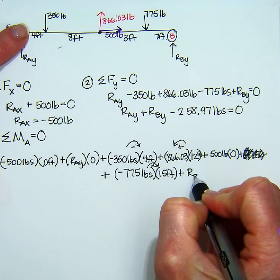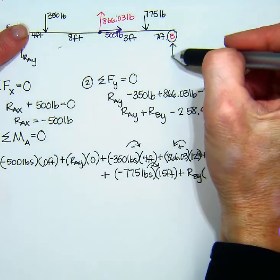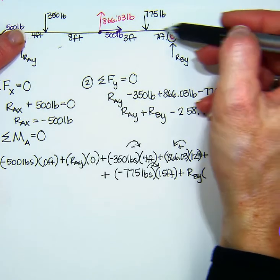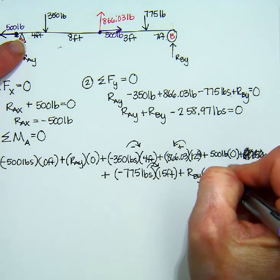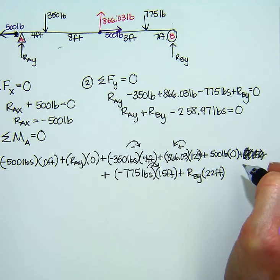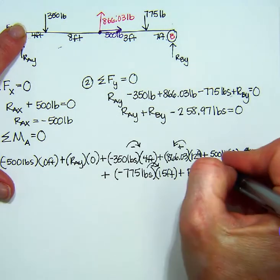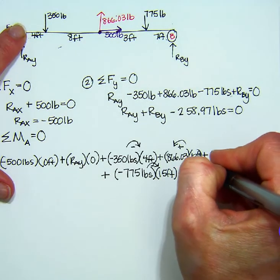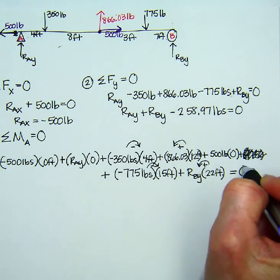Then I have reaction force B at Y. And it's going vertical, so horizontal distance is 22. And again, if I'm holding it at A and I'm pushing up at RBY, then that would make it want to go counterclockwise, which is positive, and that's how I have it set up. So all of that has to equal 0.